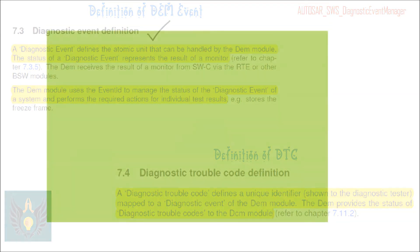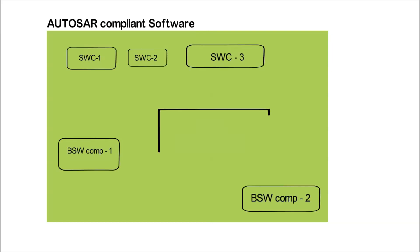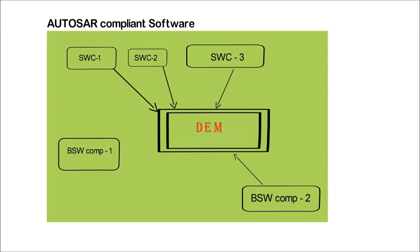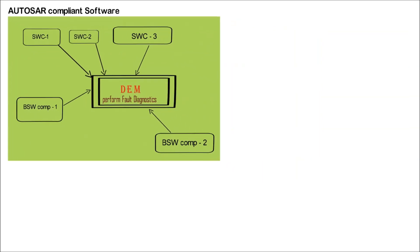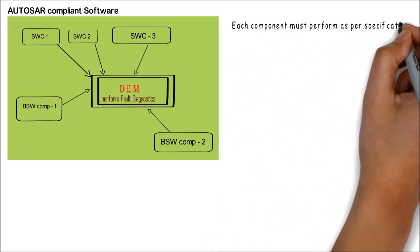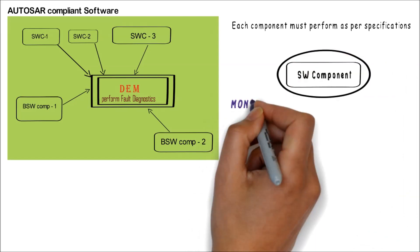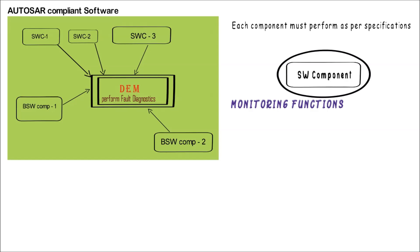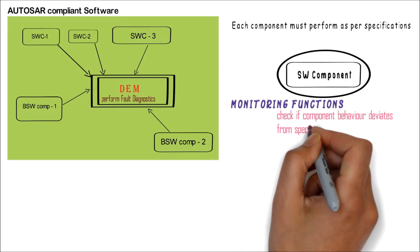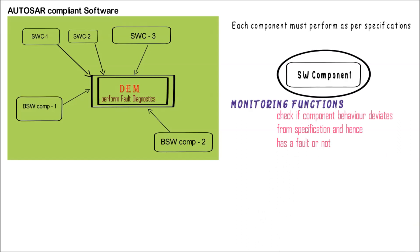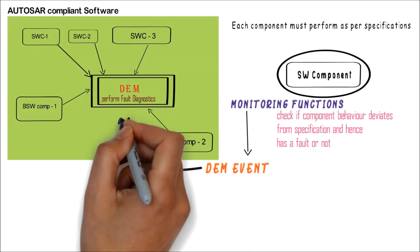In AUTOSAR, the job of DEM is to handle the faults monitored by various modules and perform the diagnostics processing. Each component, be it hardware or software, must perform according to the specifications and customer requirements. This behaviour of each component can be monitored by special functions known as monitoring functions. For each monitoring function, there is a corresponding DEM event configured in the AUTOSAR component DEM.